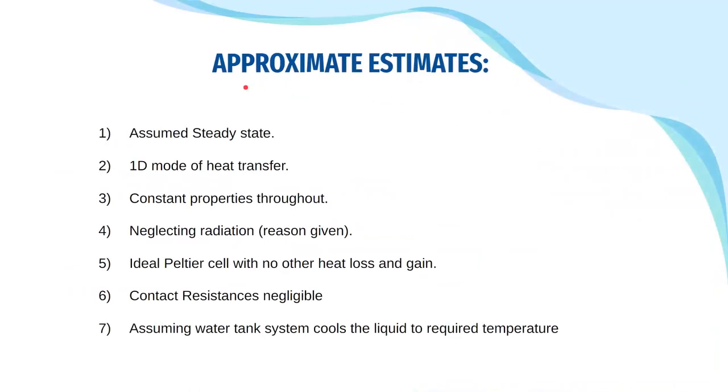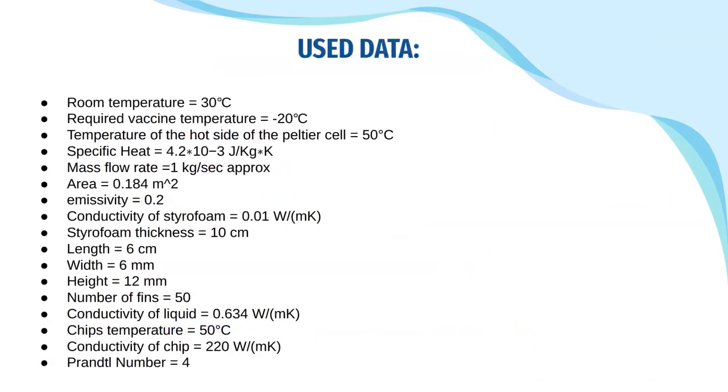So, these are some of our approximate estimates which we have made while solving. We have assumed steady state, 1D mode of heat transfer, constant properties throughout, neglecting radiation. Reasons have been given afterwards. Ideal Peltier cell and no other heat loss and gain. Contact resistances are negligible. Assuming water tank system cools the liquid to required temperature. These are the data which we have used for our calculation. You can pause the video and have a look at this.